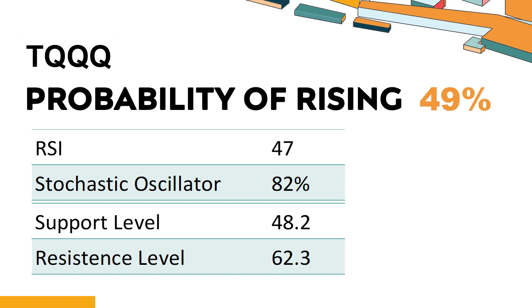Trend Outlook: TQQQ has a 49% probability of rising stock price. When the probability of rising is lower than 50%, the probability of falling is relatively high. Combining multiple technical analysis indicators, TQQQ has four bullish signals and four bearish signals. TQQQ's short-term support level is 51.5; if it falls below 51.5 during the session, it will have a chance to test 48.2.